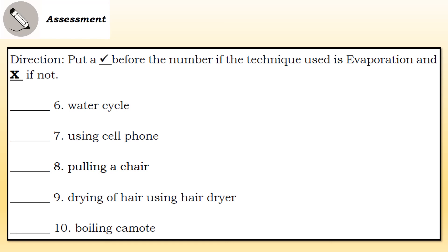For numbers six to ten, put a check if the technique uses evaporation and an X if it does not. Number six: Water cycle. Number seven: Using a cell phone. Number eight: Pulling a chair. Number nine: Drying of hair using a hair dryer. Number ten: Boiling camote.